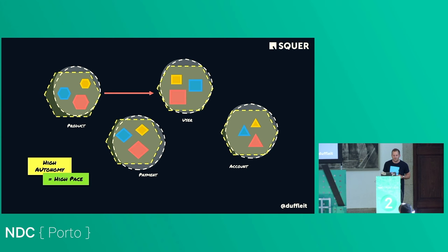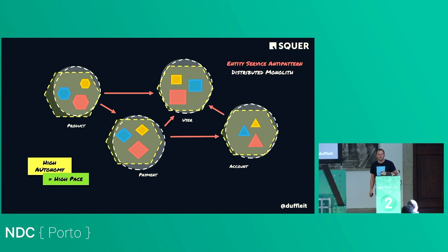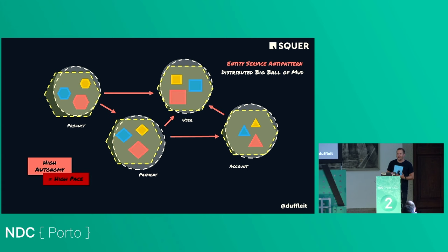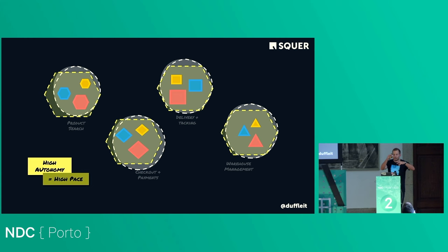We fast-forwarded and totally messed up in many situations. We built microservices around entities — product needed a user, user needed a payment, payment needed an account — the entity service anti-pattern — and ended up in a distributed monolith. It took another five years to learn we shouldn't slice microservices around entities. I'd actually call it a 'distributed big ball of mud.'